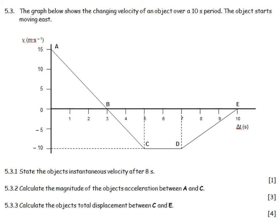This graph shows the changing velocity of an object over a 10 second period. The object starts moving east, so that's all east above the line, this will be west below the line. State the object's instantaneous velocity after 8 seconds, I come down at 8, I go across, and I see that I hit at somewhere around negative 6 or negative 7 metres per second. It's just a reading off the graph. It's at that moment.